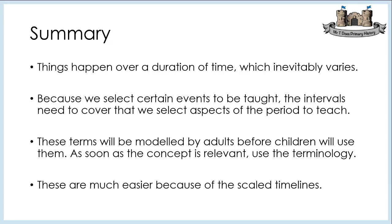Just to quickly summarise: in history, things happen over a duration of time. That duration inevitably varies — from the enormous Paleolithic overview through to the World Wars, where we teach for the full half term but it's only a duration of around 30 to 40 years. And because we select certain events to be taught, the intervals reflect that we select aspects of the period to teach. We can't teach everything. The brilliant Ian Dawson of Thinking History describes it as: we're going to teach the story of the Romans, but we've only got time to read a few pages. These terms will be modelled by adults before children use them — that's just normal teaching. As soon as the concept of interval and duration is relevant, teachers should be using the terminology. Both of these concepts are much easier to teach and understand because of clearly scaled timelines.